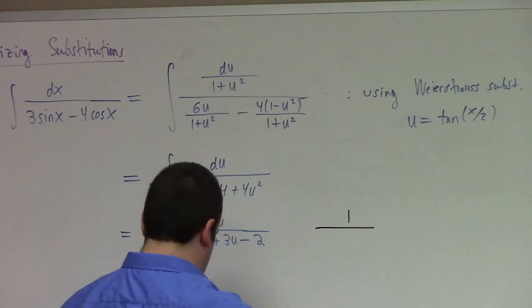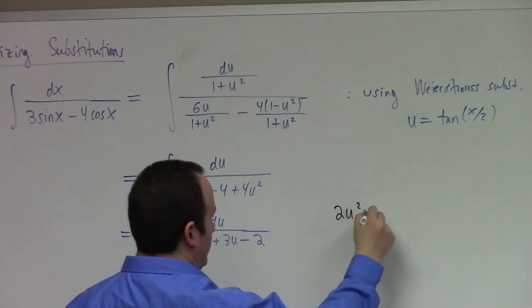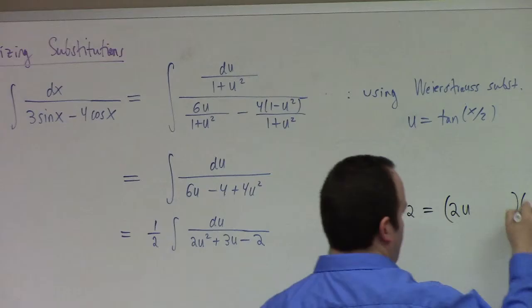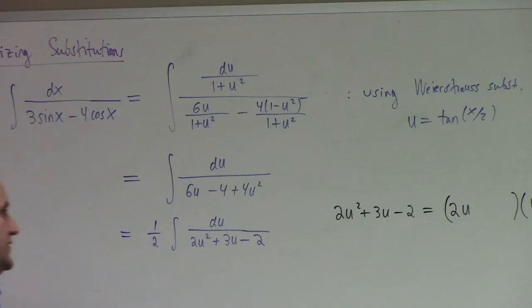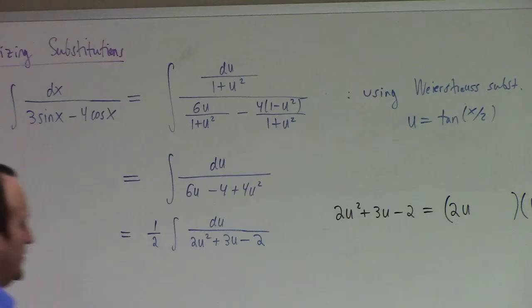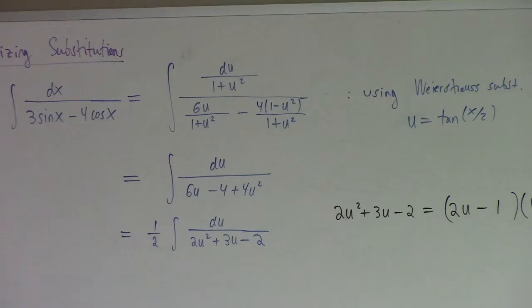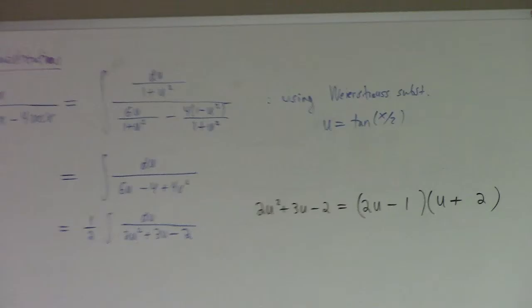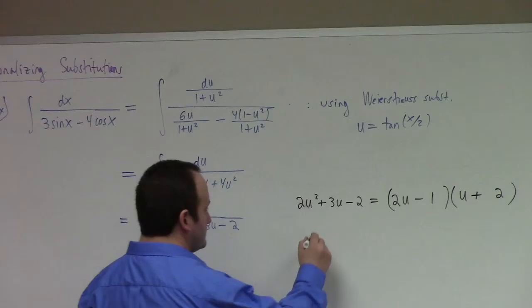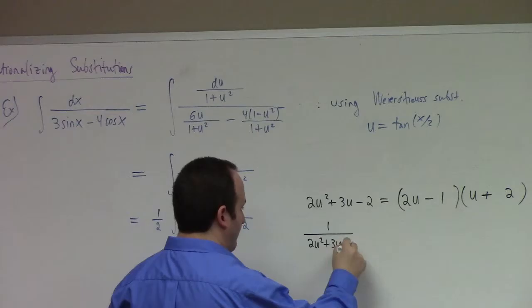We haven't faced a quadratic quite like this before — most of our examples had a monic polynomial in the denominator. But 2u squared plus 3u minus 2 factors. Let's do a little algebra: 2u times something, u times something. With plus 2 and minus 1, I get 4 minus 1 equals 3, which works — so it factors as (2u minus 1)(u plus 2).